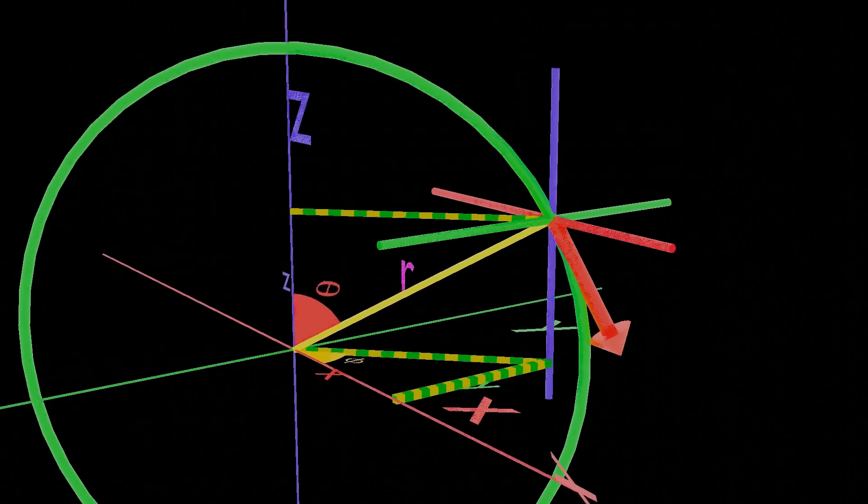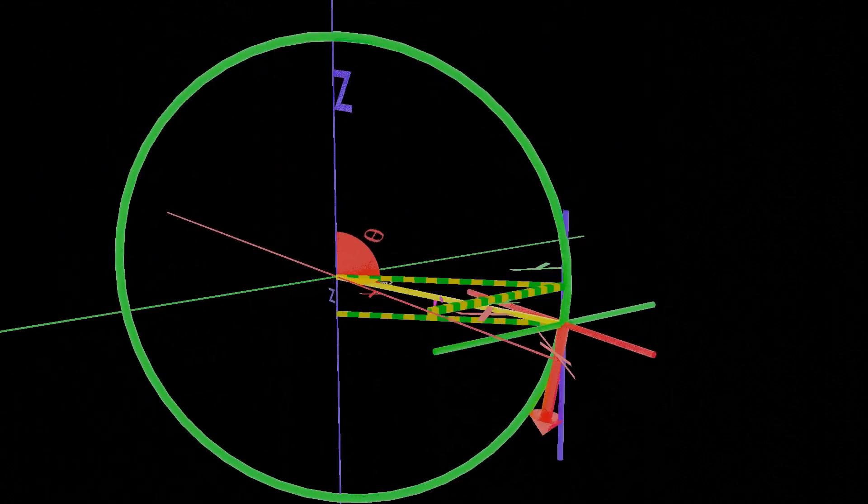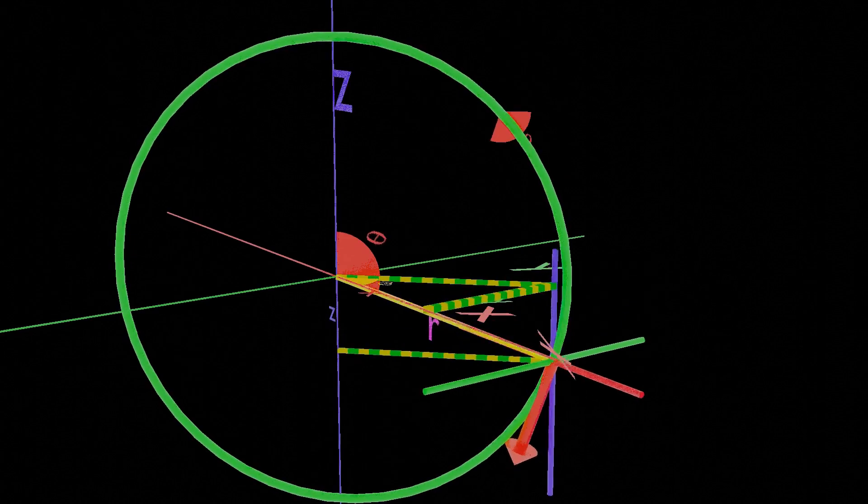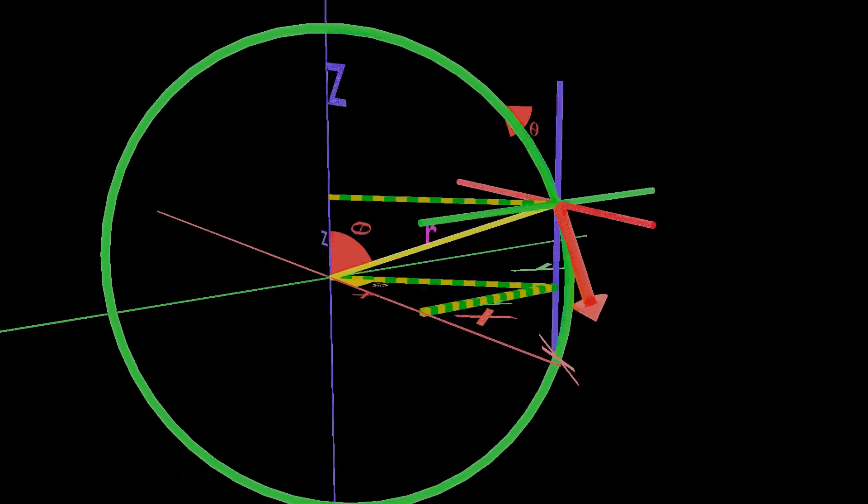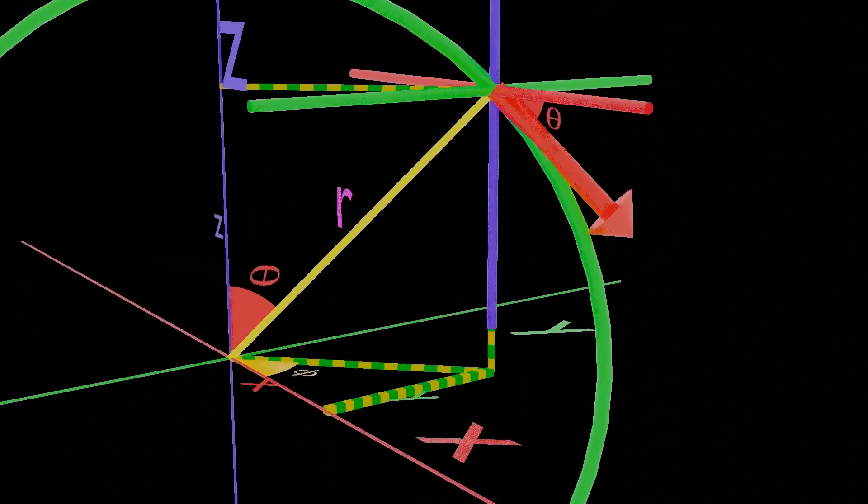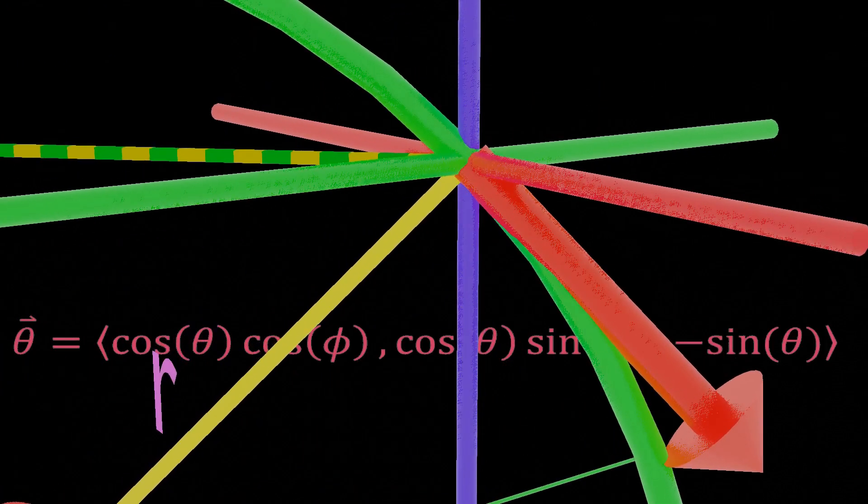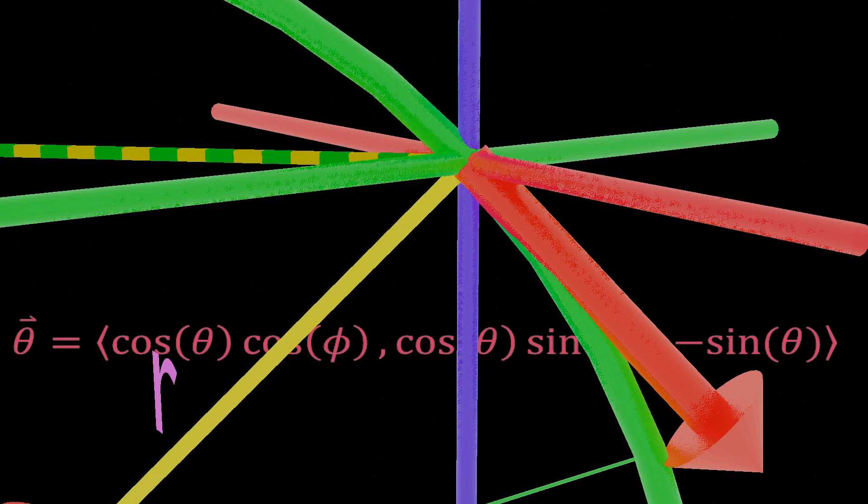If you increase theta, you will get a circle of radius r. So in order to find its direction at any point, you simply draw a tangent at this point and take the direction of increasing theta.